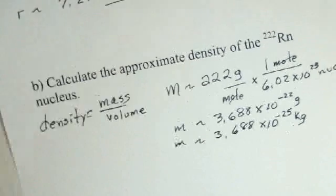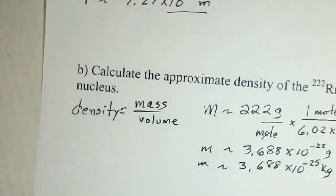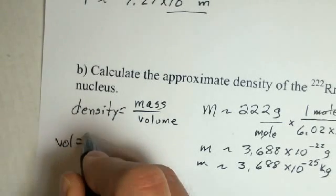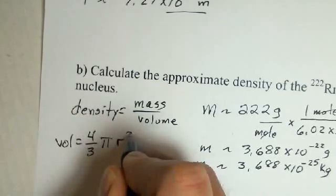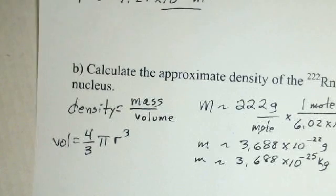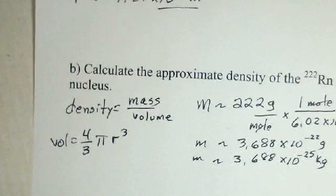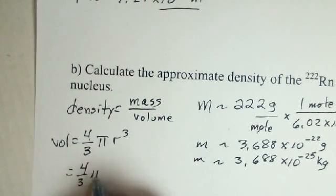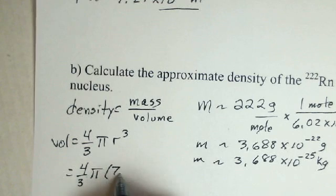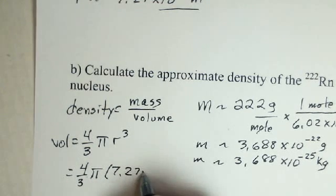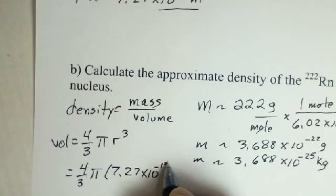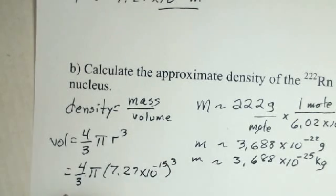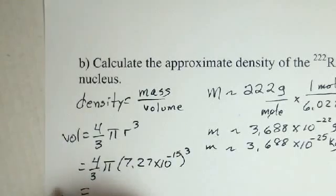Now, the volume. For the volume, we use the fact that we're assuming that we're in a sphere shape. Four-thirds pi r cubed is our volume. And in part A, we calculated the radius. So, we do four-thirds pi, 7.27 times 10 to the minus 15. And we need to cube that. And we come up with a volume.